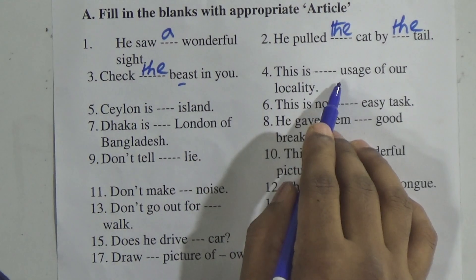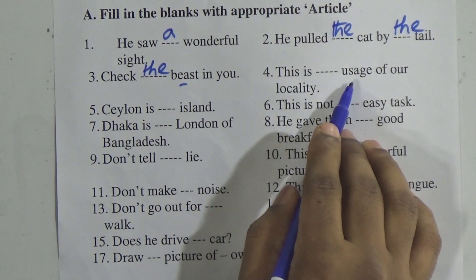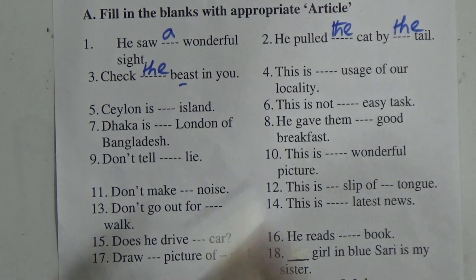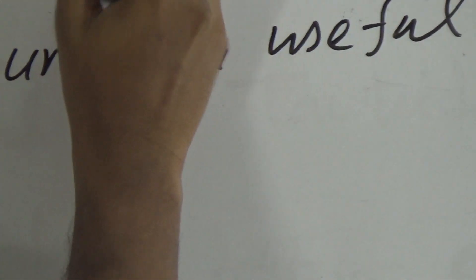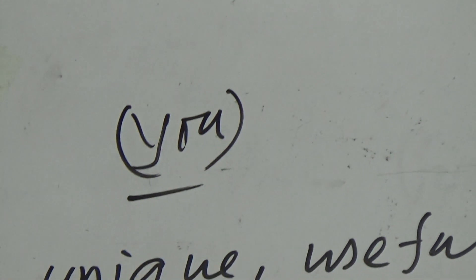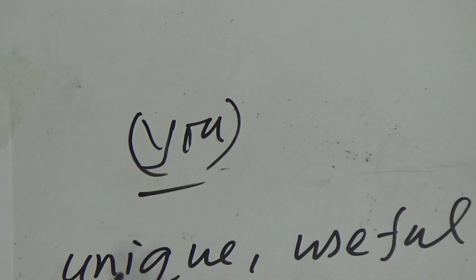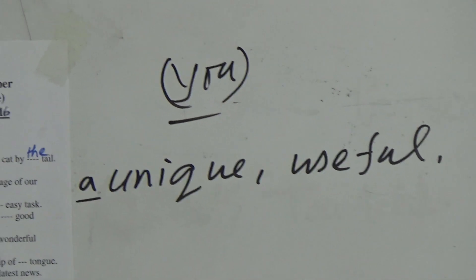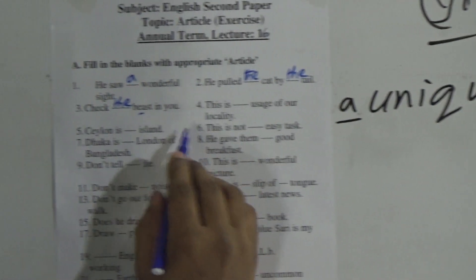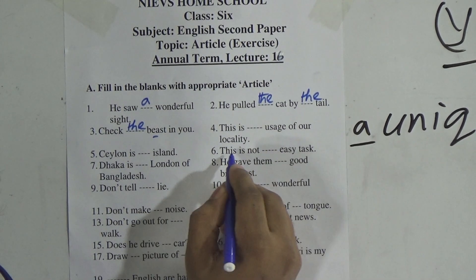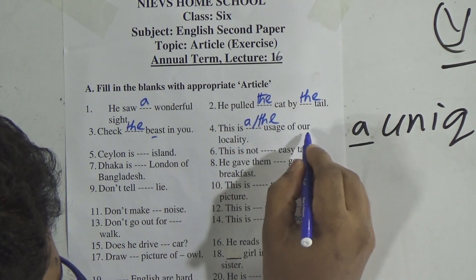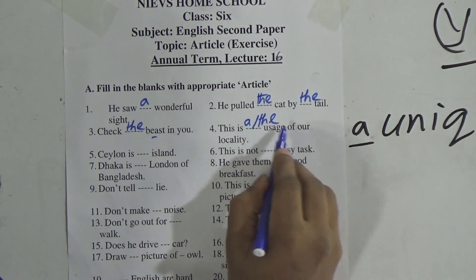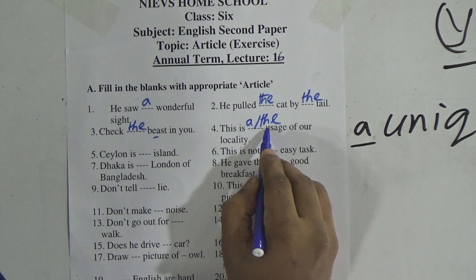This is a uses of our locality. If we find words like 'unique', 'useful', 'university' — if we find 'u' before a vowel, we use 'a' not 'an'. So: this is a uses of our locality. You can also use 'the' here: this is the uses of our locality, because before 'of' we use 'the'. If you find any specific quality, we use 'the' also.